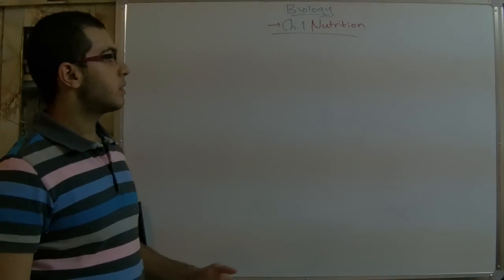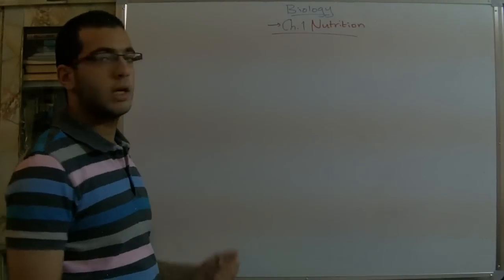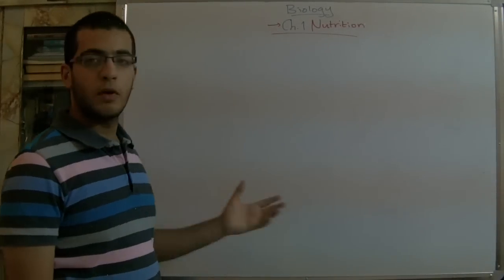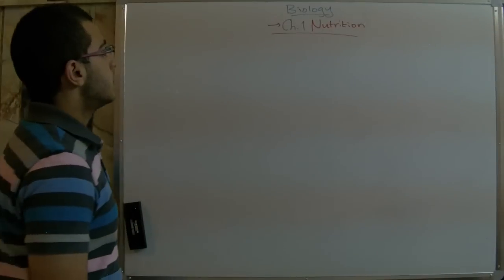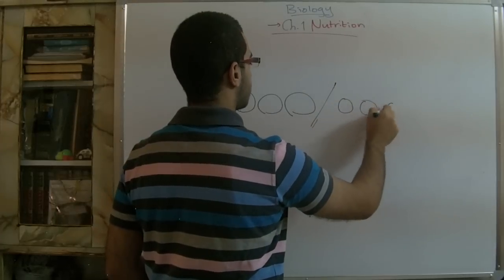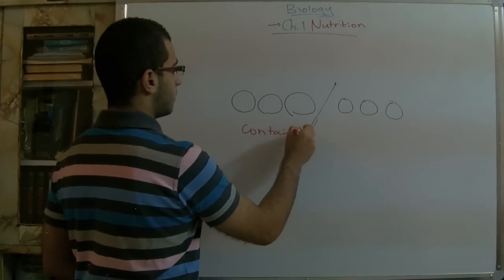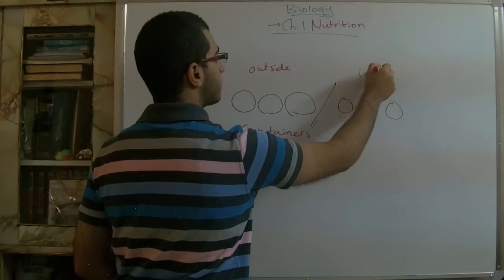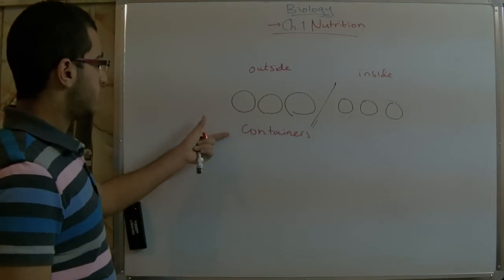We said that the concentration of the solution inside the root hair is higher than the concentration of the solution outside the root hair. So the water and the mineral salts are transferred from the soil, from outside the cell, to inside it. Here, if we have these containers: this is outside, and this is inside — this is the root hair cell, and this is outside the root hair cell, here in the soil medium.